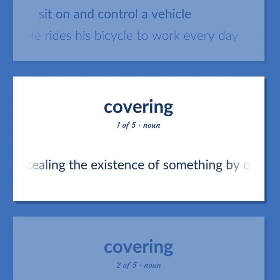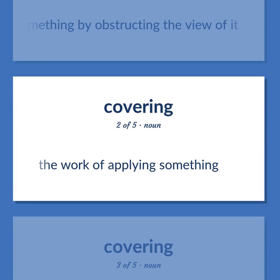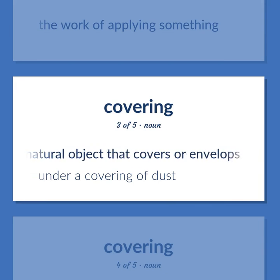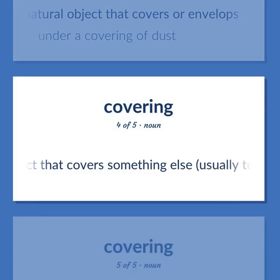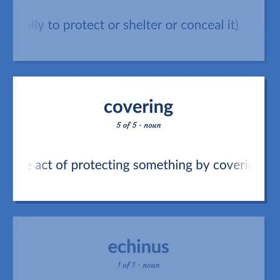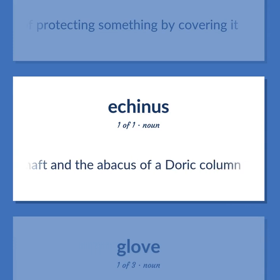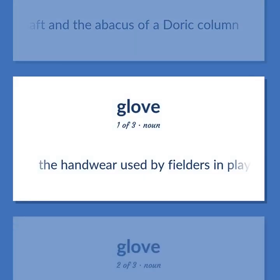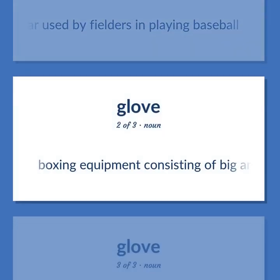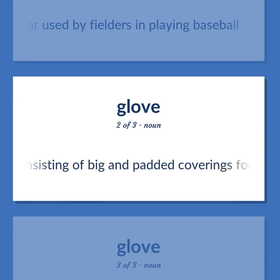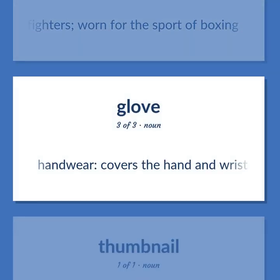Cover/Glove: The act of concealing the existence of something by obstructing the view of it. The work of applying something. A natural object that covers or envelops — under a covering of dust. An artifact that covers something else, usually to protect or shelter or conceal it. The act of protecting something by covering it. Ovalo molding between the shaft and the abacus of a Doric column. The handwear used by fielders in playing baseball. Boxing equipment consisting of big and padded coverings for the fists of the fighters, worn for the sport of boxing. Handwear that covers the hand and wrist.